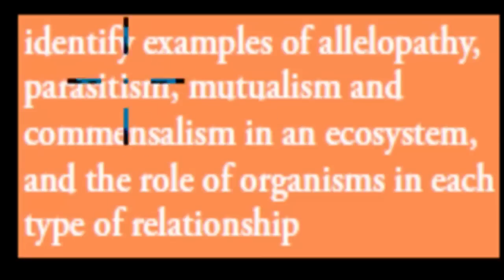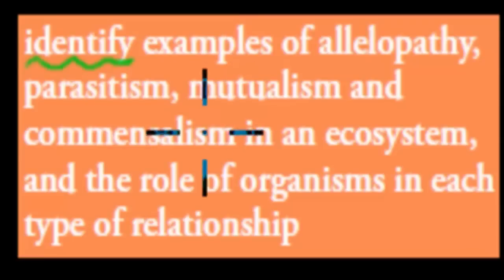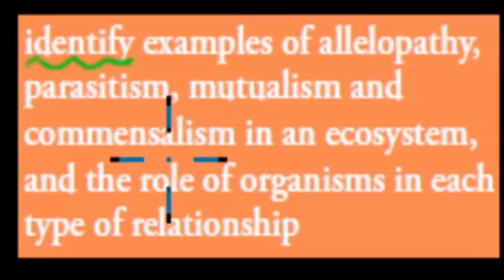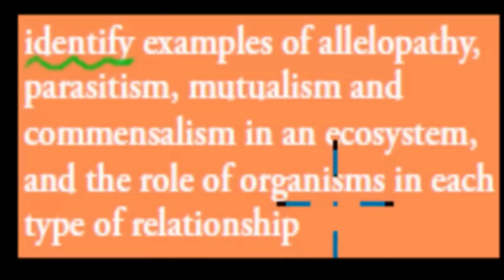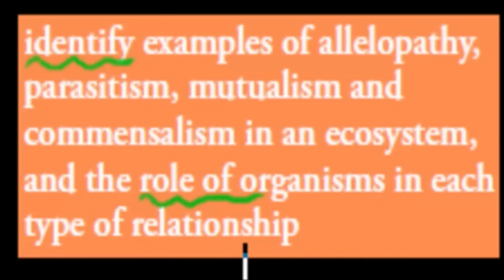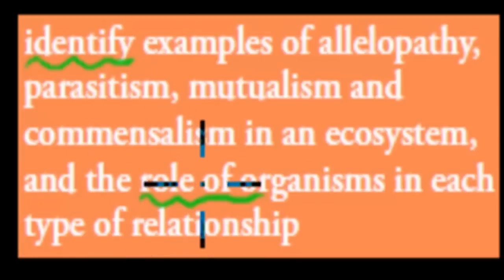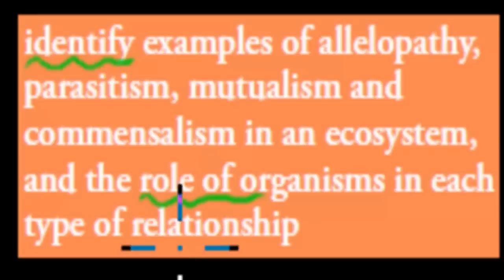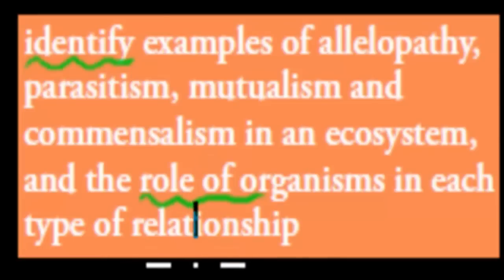The learning point says: identify examples of allelopathy, parasitism, mutualism, and commensalism in the ecosystem, and the role of each organism in each type of relationship. So we need to talk about allelopathy, parasitism, mutualism, and commensalism, give examples, and say which organism is affected in which kind of way.